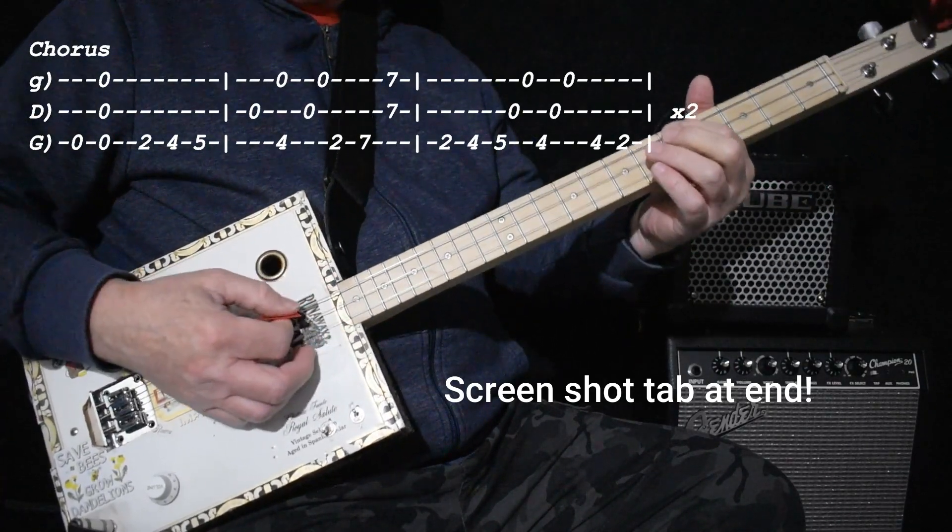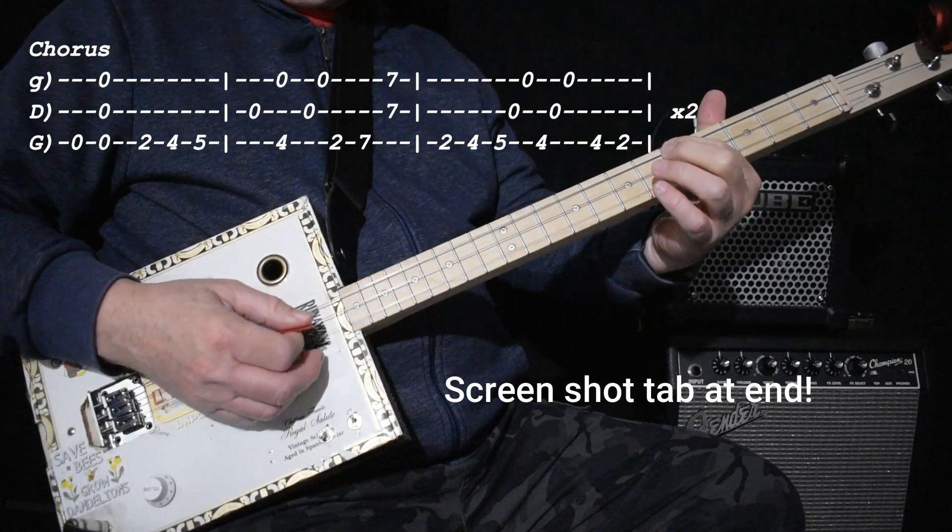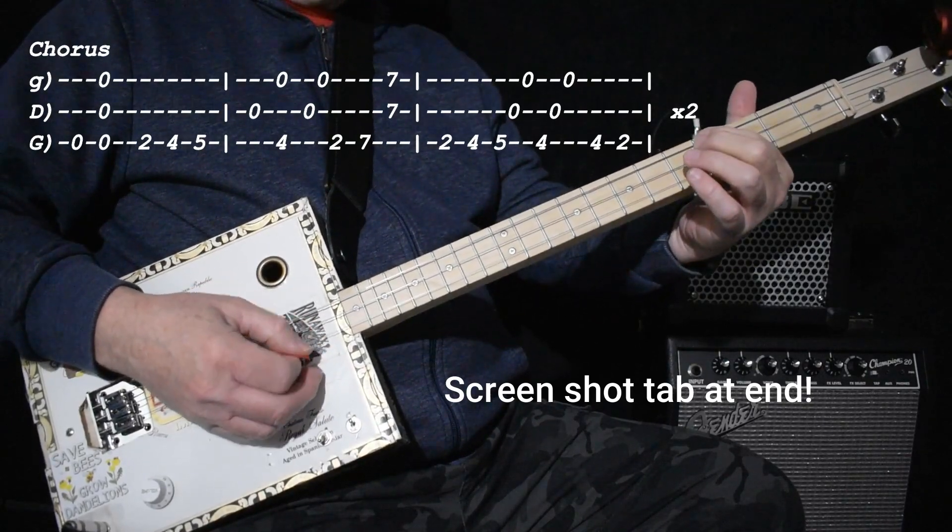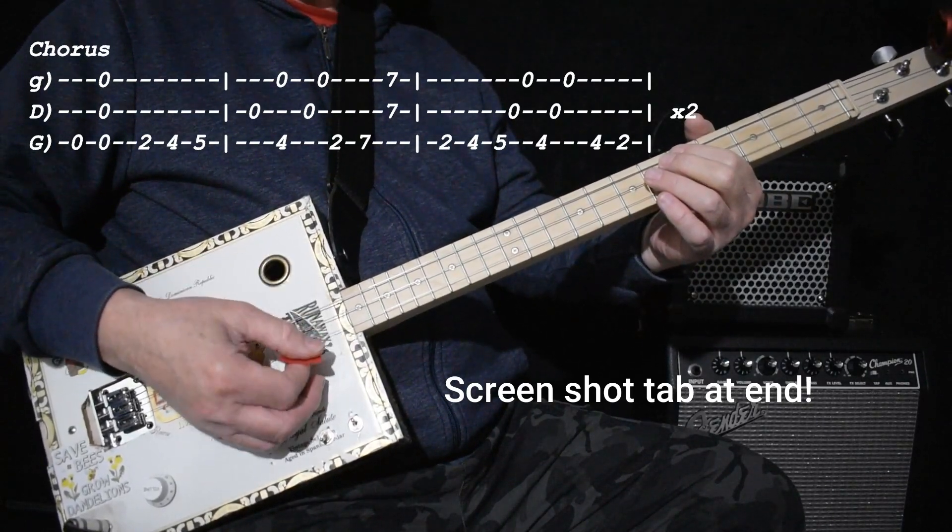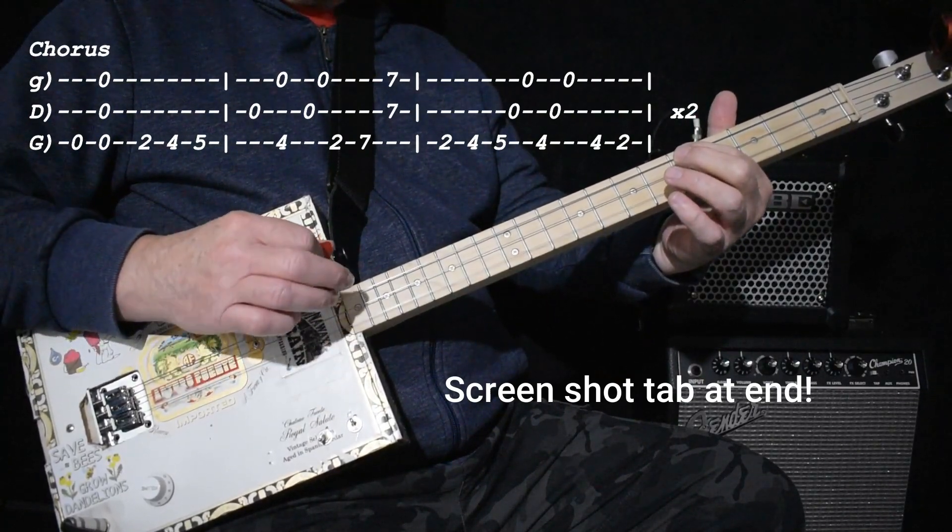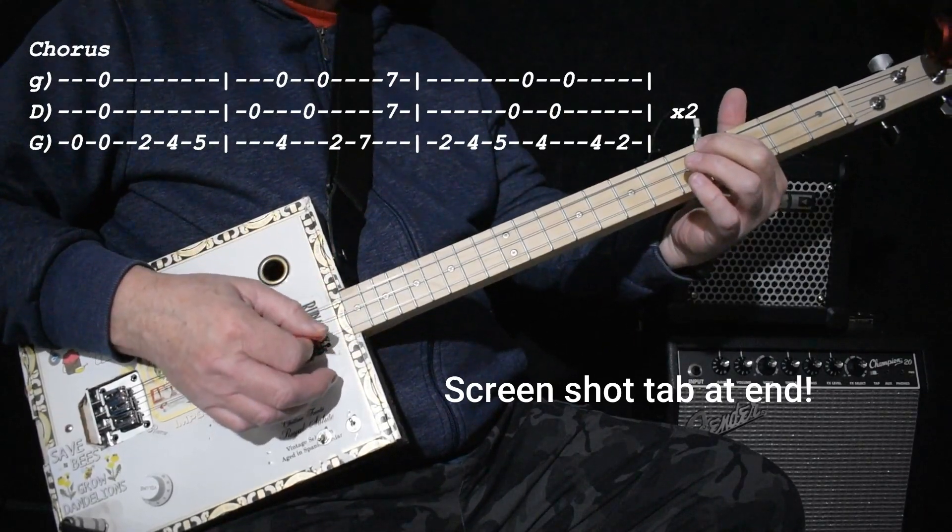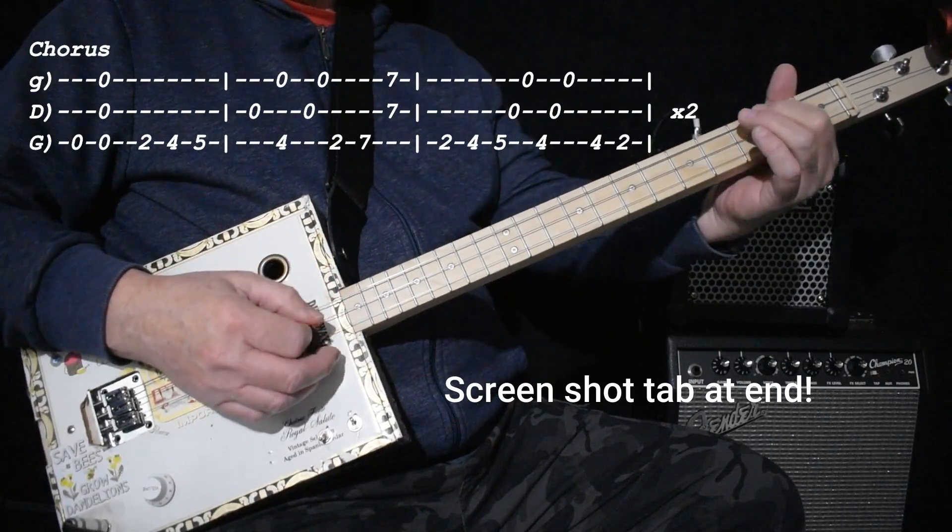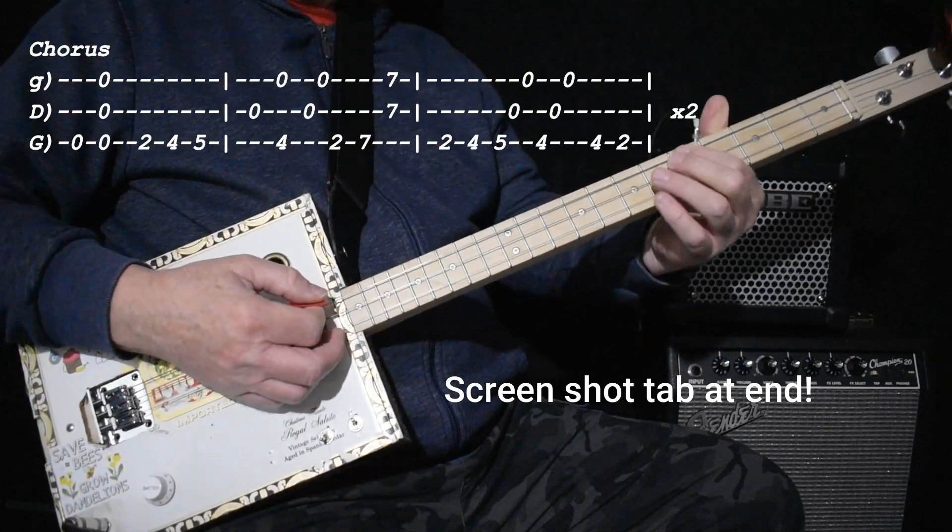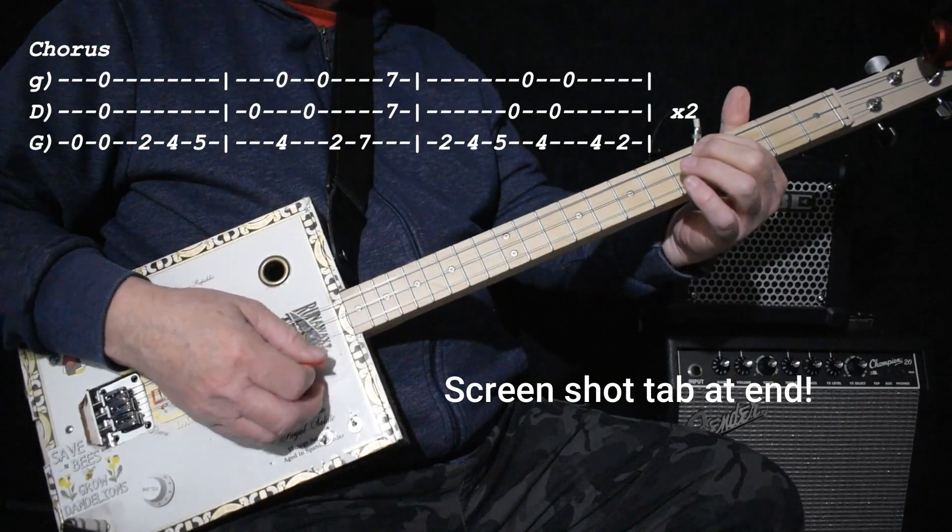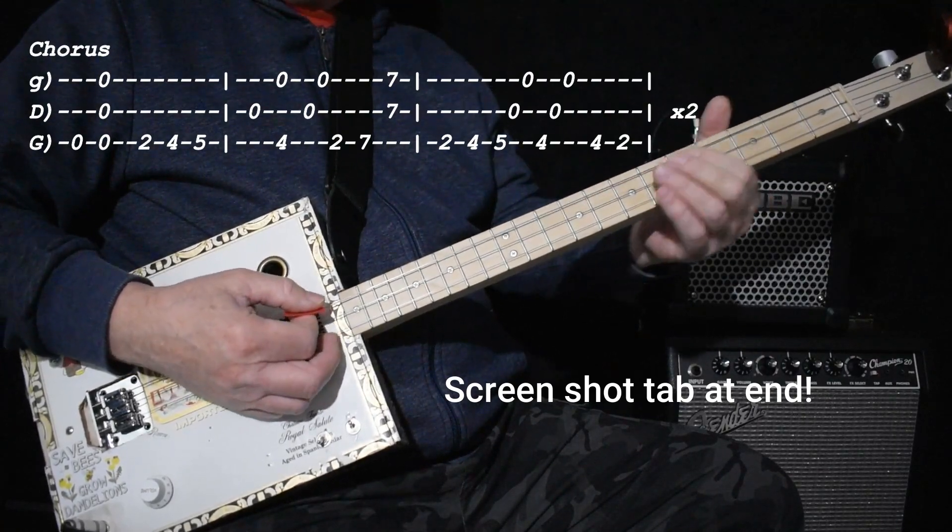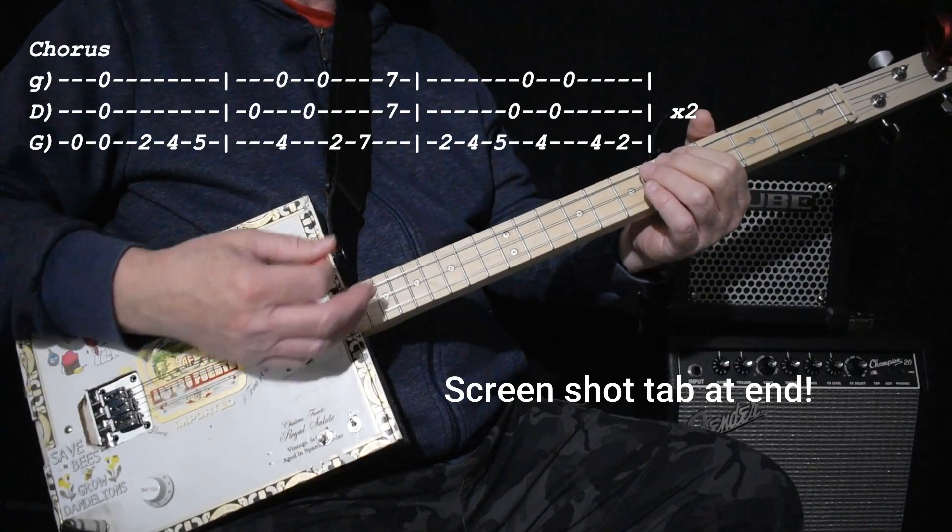Like that. And when you're doing that five, open, open, [plays] you might want to up pick on the high string. [demonstrates] It allows your pick to come up and get back to the low string very quickly. [exaggerates picking] I'm exaggerating there, obviously. [plays]